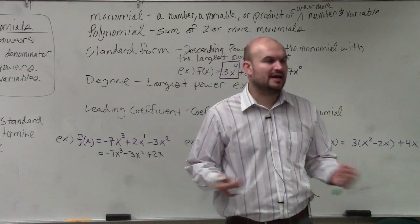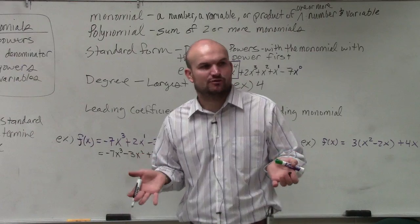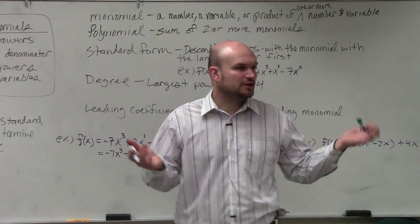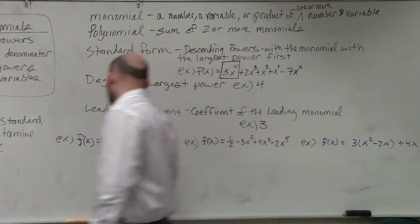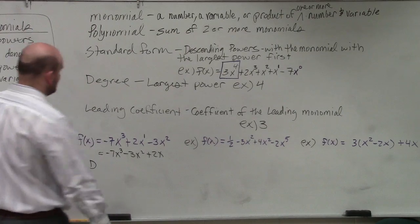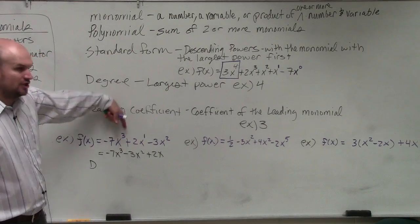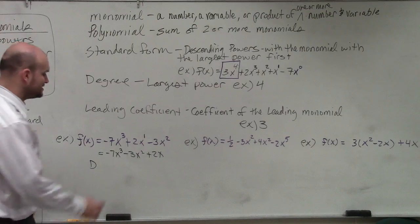Does everybody understand? Now, I'm going to abbreviate degree as d and leading coefficient as LC. The degree in this example is my largest power, which is what I wrote first: 3.